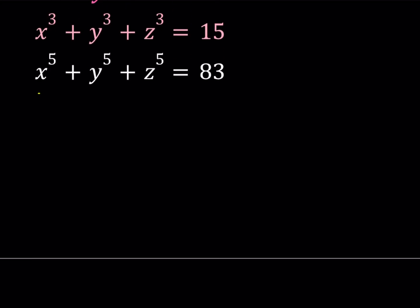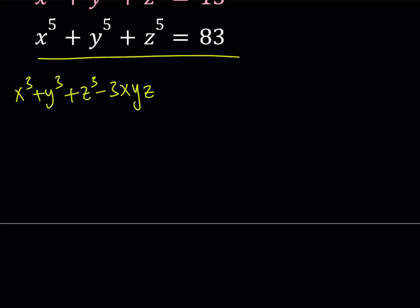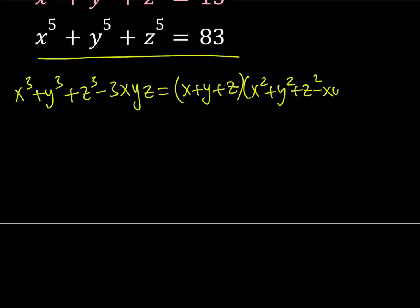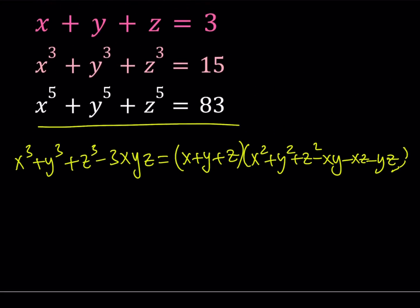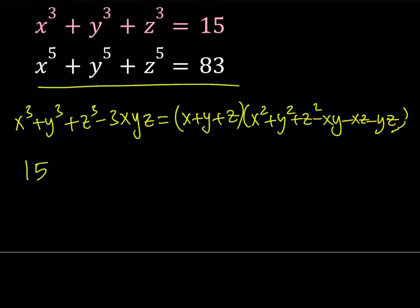I would like to start with the sum of the cubes. So let's go ahead and write our famous identity. As you know, this polynomial — and we've done some videos on this — is divisible by x plus y plus z. And we can write it as follows. So this gives us the first part. We know the value of x cubed plus y cubed plus z cubed. So let's go ahead and replace it with that and make some substitutions here.